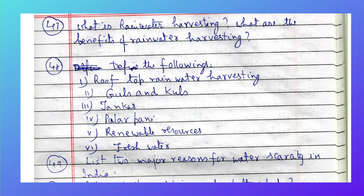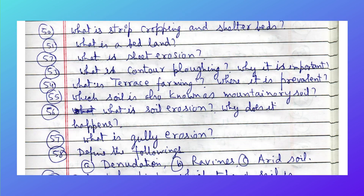List the two major reasons for water scarcity in India. What is strip cropping and shelter belts? What is badland? What is sheet erosion? What is contour plowing and why is it important? What is terrace farming and where is it prevalent?